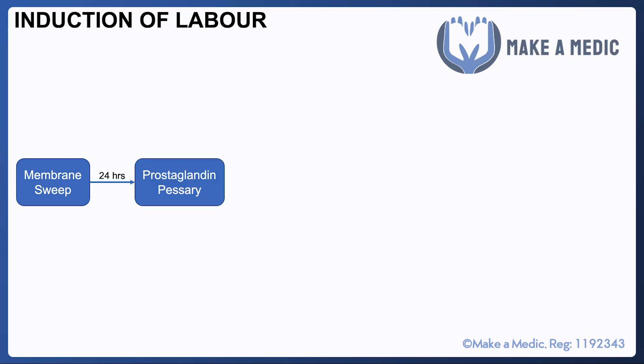If that alone is unsuccessful after 24 hours, then a prostaglandin pessary may be inserted. This is usually a small strip of tissue which is impregnated with prostaglandins and it's inserted into the vagina, and the local release of prostaglandins can get the labor going.